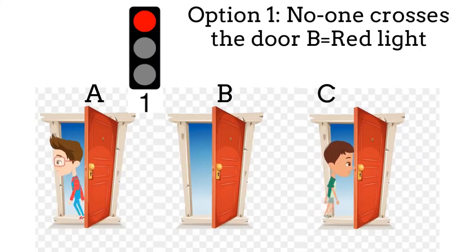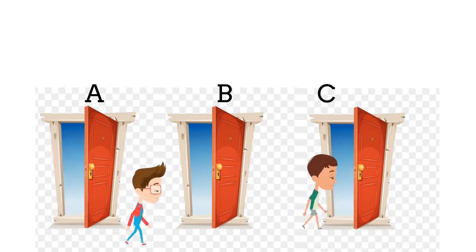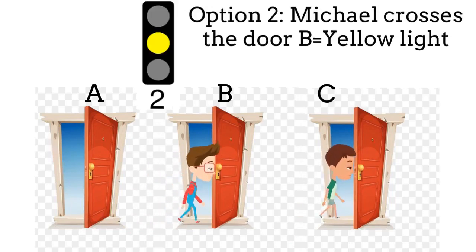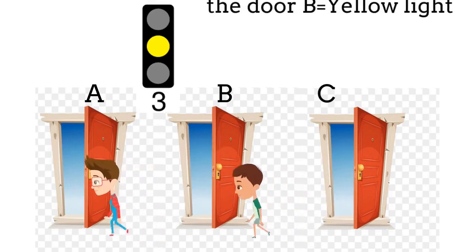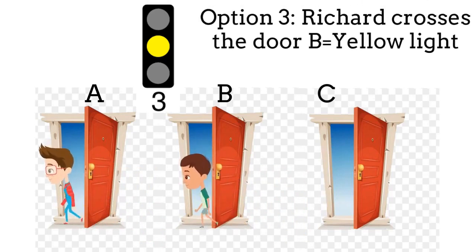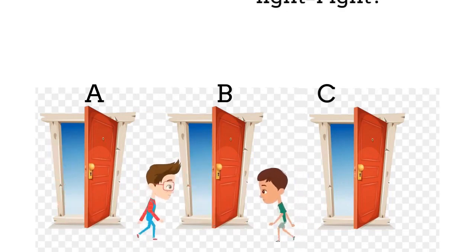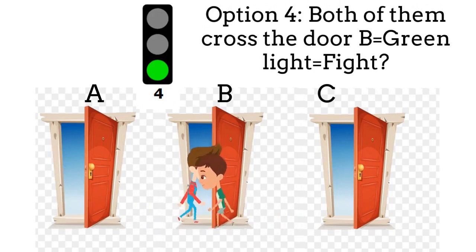Let's take a look again at the same options but now considering what happens after Michael and Richard cross the corresponding doors. Imagine that the traffic light signal is a sensor which activates some specific light color depending on which door Michael and Richard cross. Let's imagine then that the red light corresponds to the first option where no one crosses the door B. The second and third options would correspond to the cases where either Michael or Richard cross the door B. If only one of them crosses this door then the sensor will activate the yellow light. Finally, for the option where both Richard and Michael can enter the door B simultaneously assuming that there is no fight, the green light would be activated. But is it really possible for them to cross the same door even if an imminent fight?